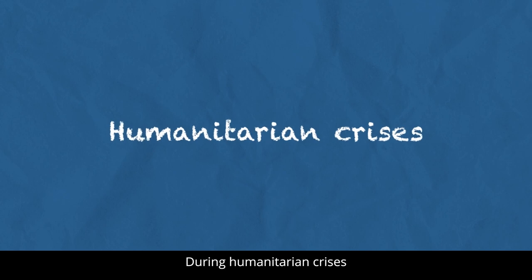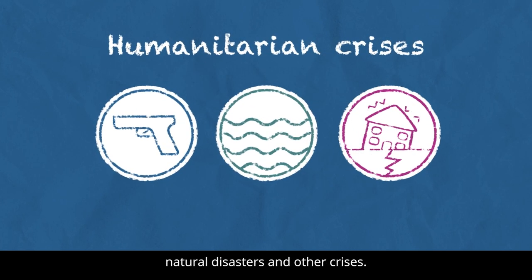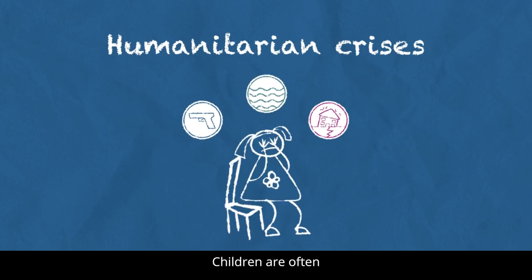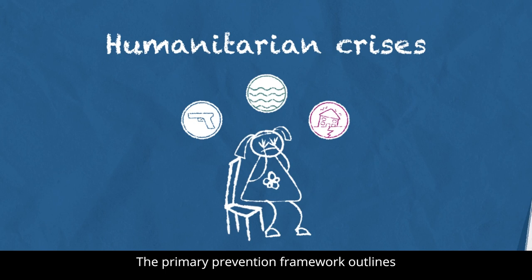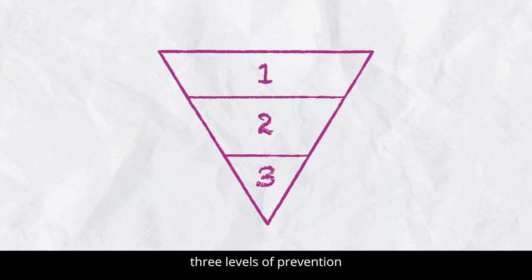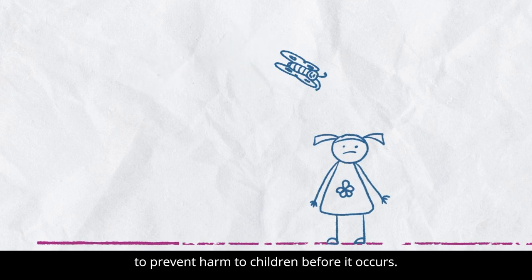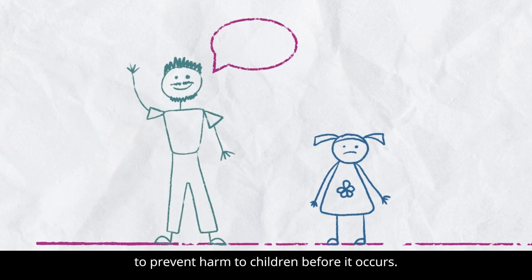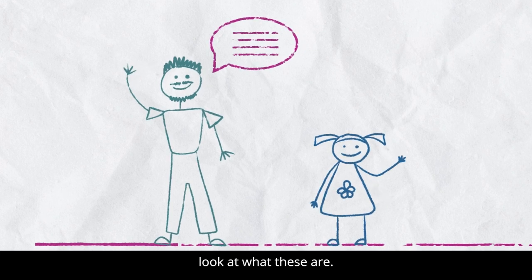During humanitarian crises, such as armed conflict, natural disasters and other crises, children are often the first victims and pay the highest price. The Primary Prevention Framework outlines three levels of prevention that can be implemented to prevent harm to children before it occurs. In this video, we will briefly look at what these are.